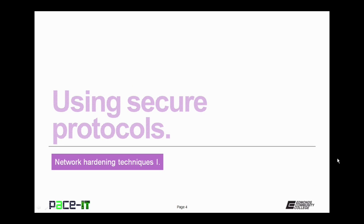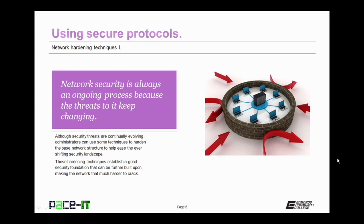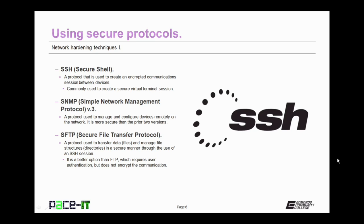I'm going to begin by talking about using secure protocols. Network security is always an ongoing process because the threats to it keep changing. Although security threats are continually evolving, administrators can use some techniques to harden the base network structure. These hardening techniques establish a good security foundation that can be further built upon, making the network that much harder to crack. One of these techniques is to use secure protocols whenever possible.